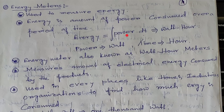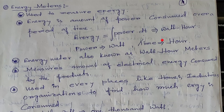Unit kya hoga energy ka? Energy ka expression: energy is equal to integration of power into dt. Power ka unit watt, and time ka unit hour. So, watt-hour mein hum energy ko calculate kar sakte hai. Energy ka unit kya hai? Watt-hour, that is power into time. That's why energy meter is also known as watt-hour meter.